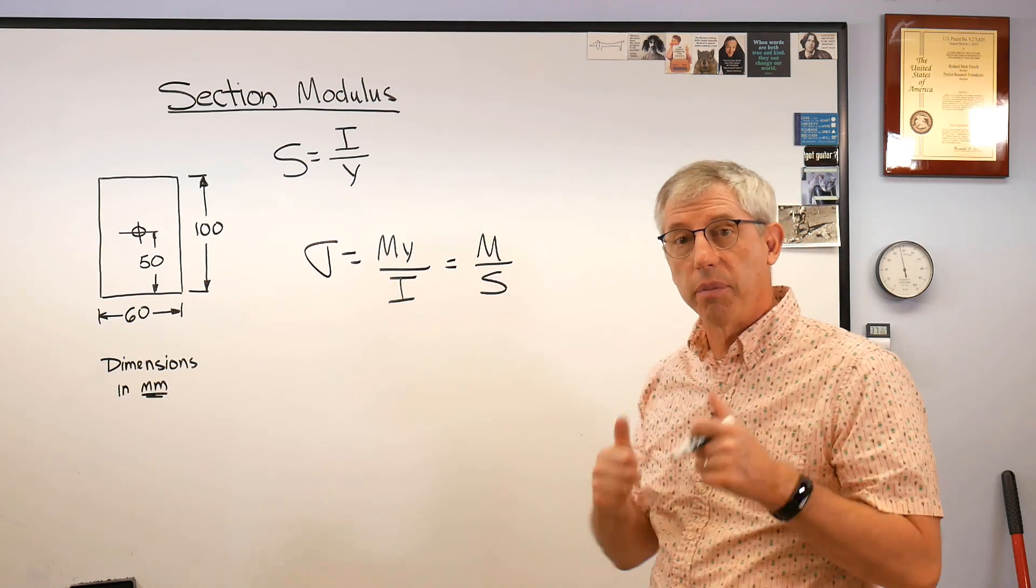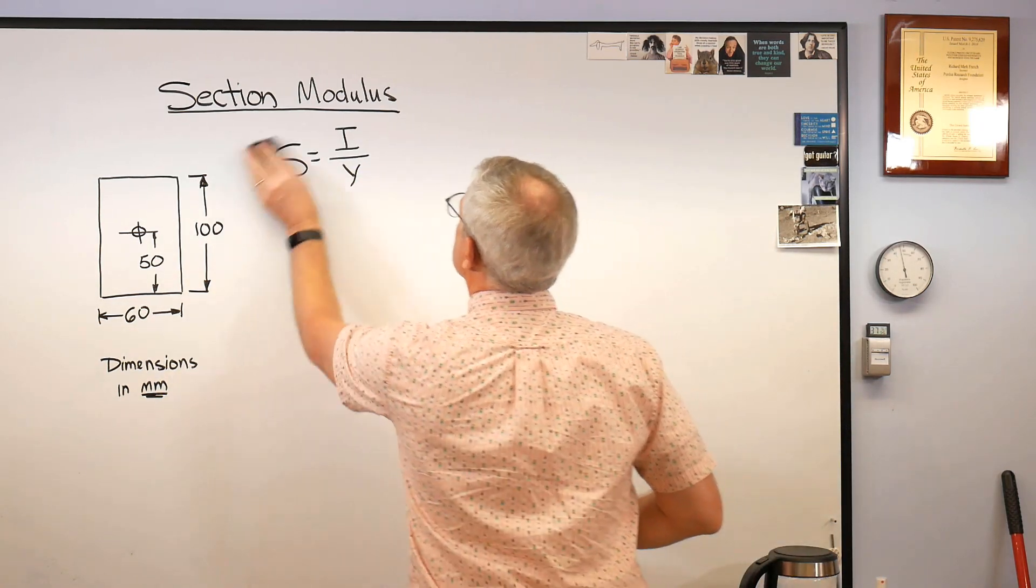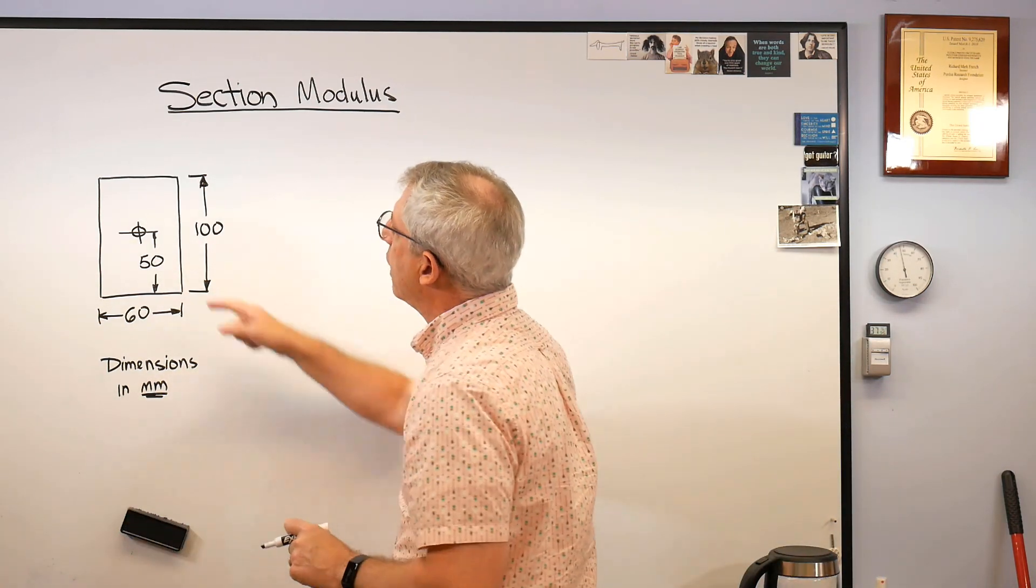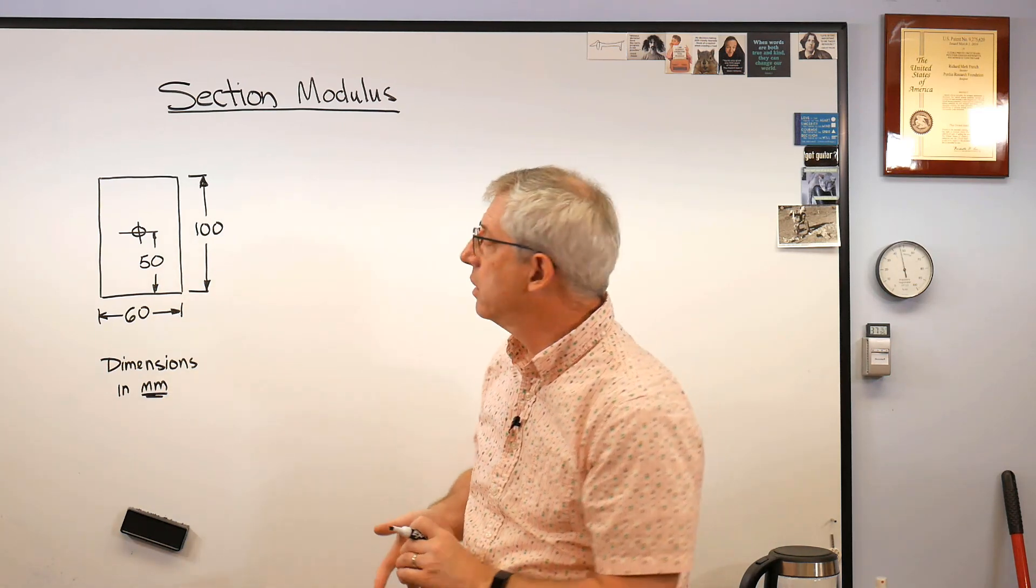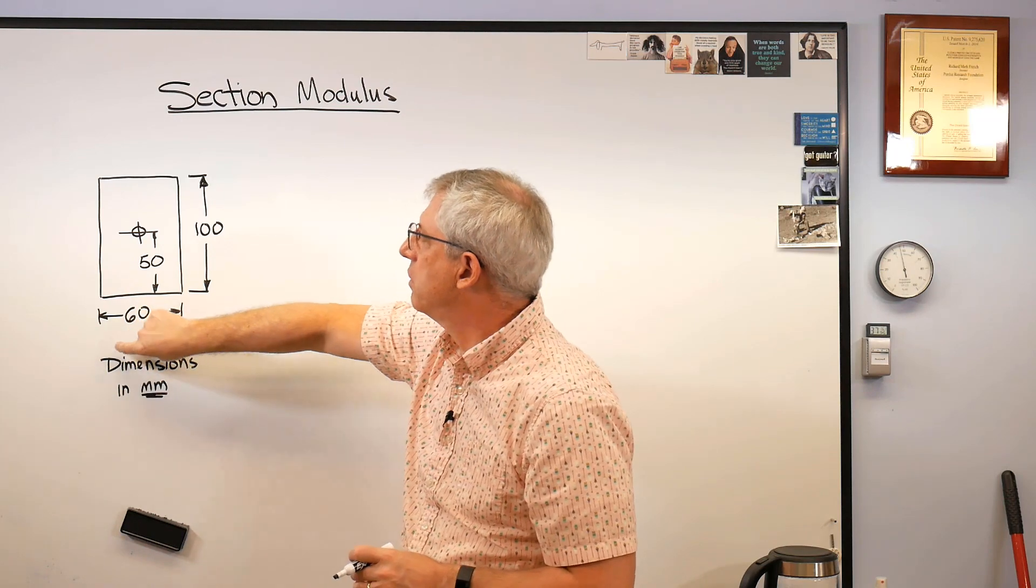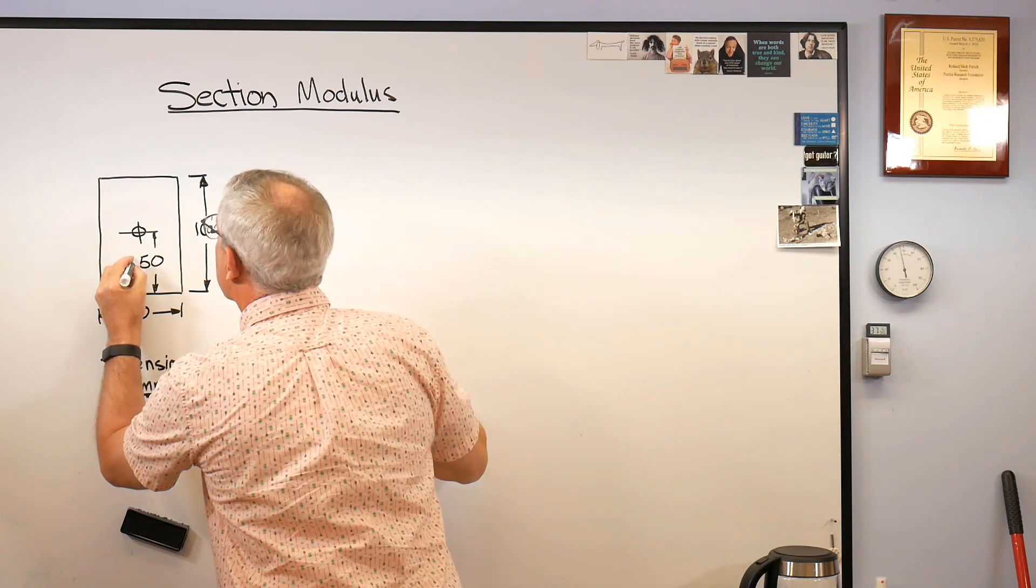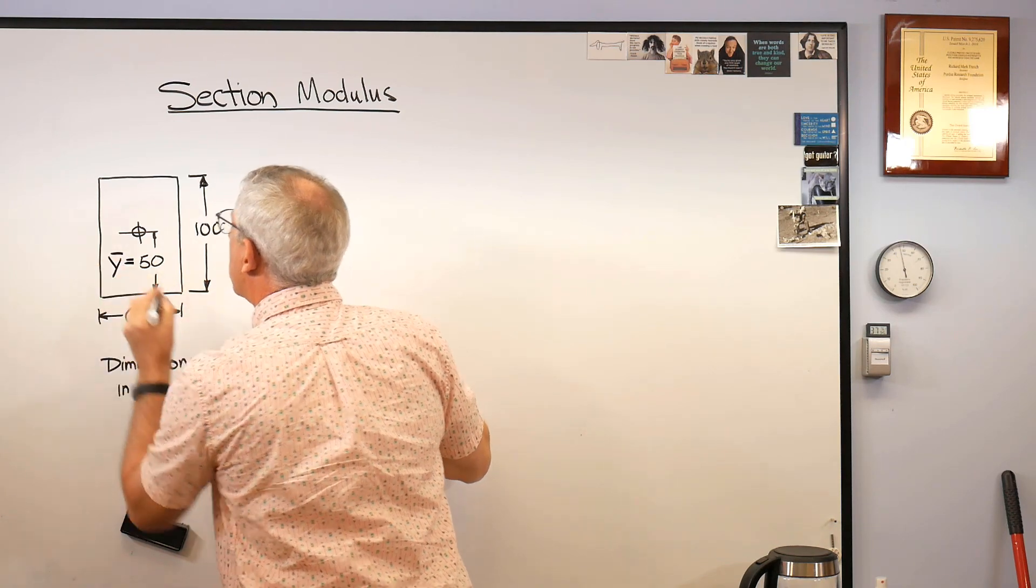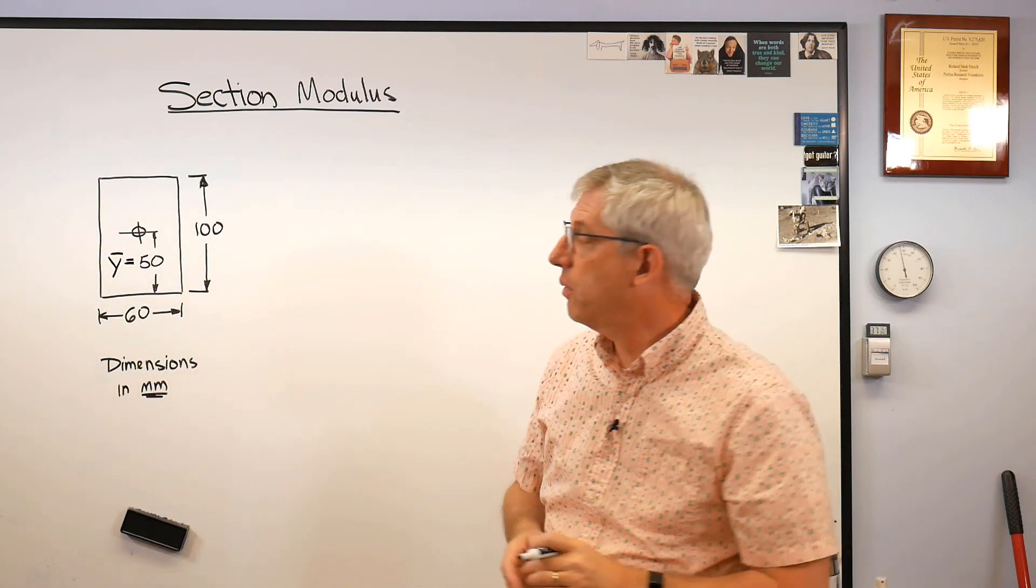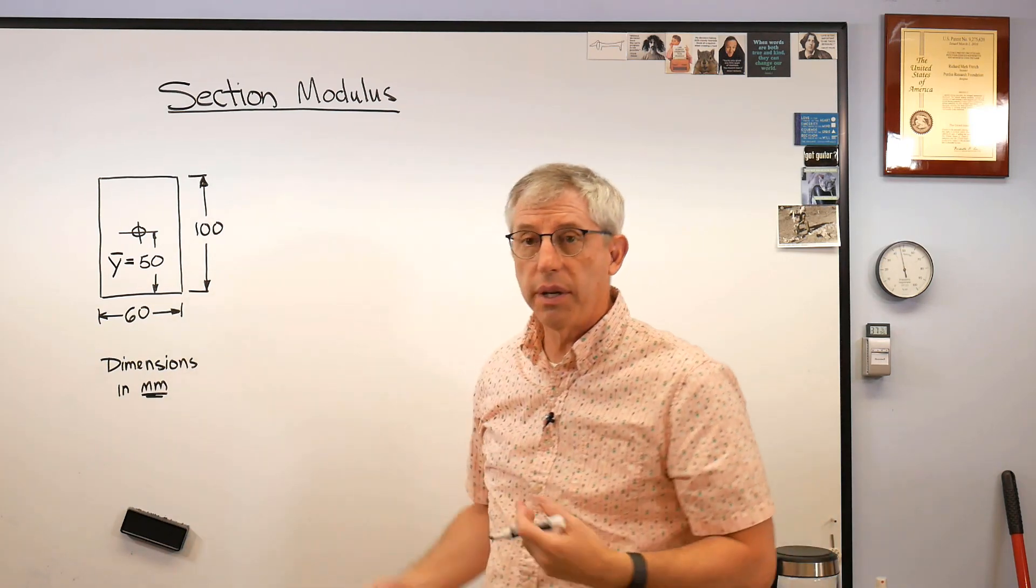Well let's run some numbers real quick. This is great in sort of the abstract but it's best if we have numbers, right? Well let's look at this. I made a little rectangular beam here. Dimensions are in millimeters. This is just a rectangle. It's got a height of 100 millimeters, a width of 60, and that means Y bar, the location of the centroid in the vertical, is 50 millimeters. It's half the distance from the top to the bottom.